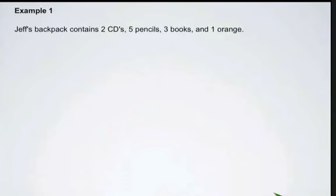In this example, we're going to create some ratios. Let's suppose that in Jeff's backpack, it contains 2 CDs, 5 pencils, 3 books, and 1 orange. If we are asked to create a ratio of the number of books to CDs, we need to take a look at all the items that he has in his backpack and place the appropriate number in our ratio format. We look to this part of the question. It says we're looking for a ratio of the number of books to CDs. We can identify that there are 3 books and 2 CDs.